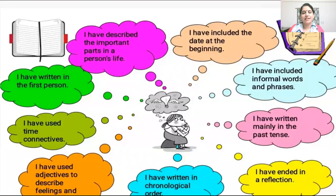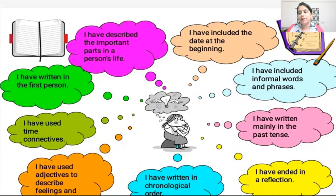This is our Diary Entry. It describes the important parts of a person's life. It is written in the first person. It uses time connectives and adjectives to describe feelings and emotions. It includes the date at the beginning, informal words and phrases, and is written mainly in the past tense. It ends in a reflection.